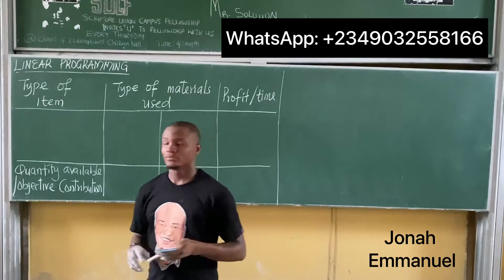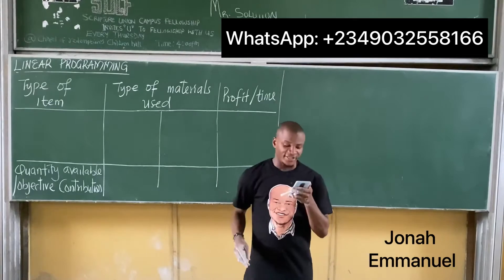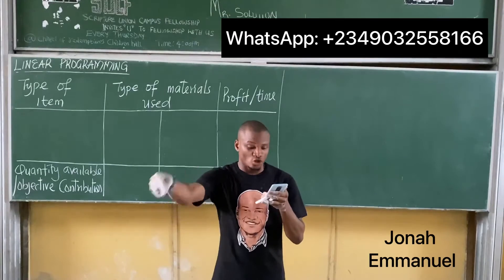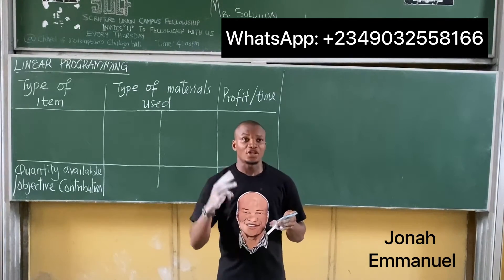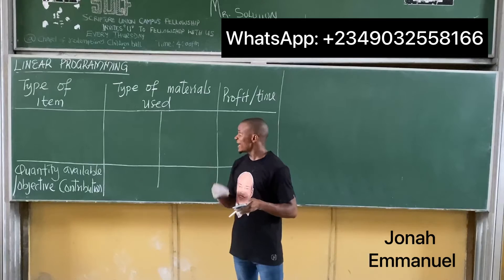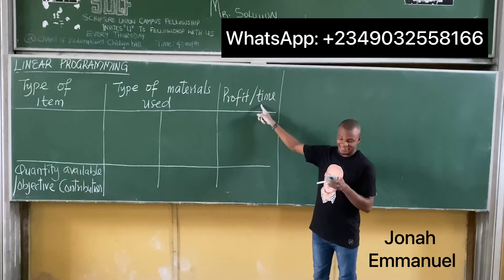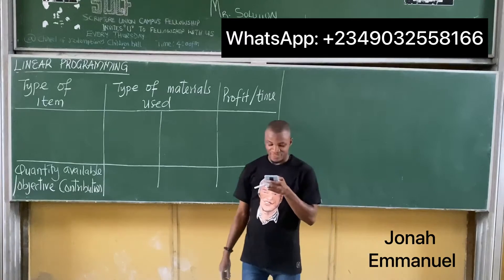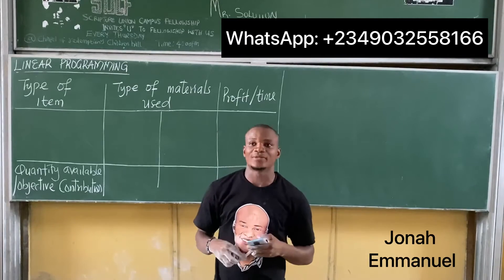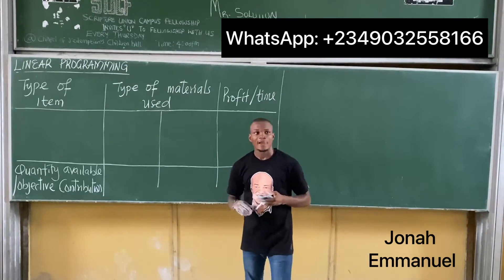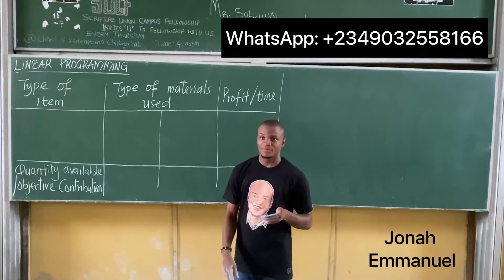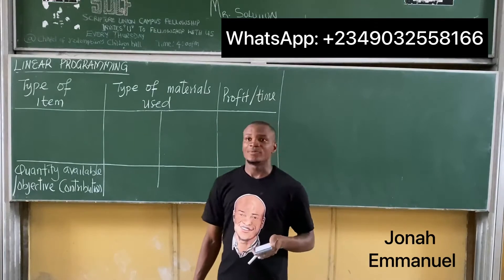Number two: the type of material used. Number three: the time or profit of each. Number four: the quantity available or objective contribution.